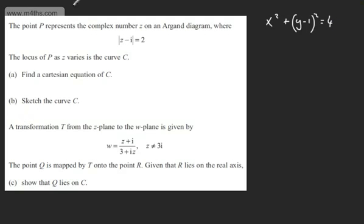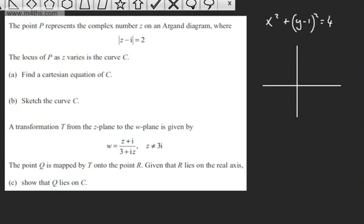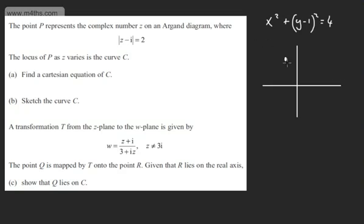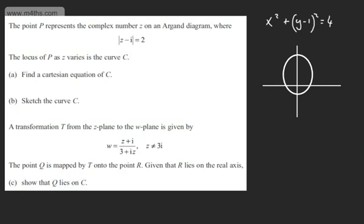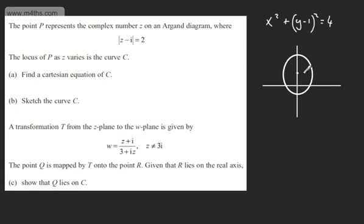In part B, we need to sketch the curve. Let's draw up some axes and place our circle on them. It's going to look something like so — not hugely accurate, but it should give a rough idea. So this is a circle with center (0, 1) and radius 2. The top point is (0, 3) and the bottom point is (0, −1).